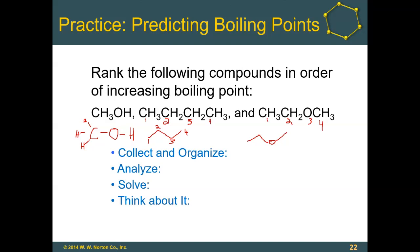Which ones do you think would have the strongest intermolecular forces and therefore the highest boiling point? Which would be lowest? Go ahead and think about that and pause the video. When we look at these three molecules, methanol has a hydrogen attached to an oxygen, which means hydrogen bonding can occur. The oxygen is pretty electronegative, so methanol also has a pretty strong dipole. Butane — C4H10 — does not have any nitrogen, oxygen, fluorine, or other electronegative elements like chlorine or bromine, so that molecule is nonpolar and the only intermolecular force is dispersion forces.